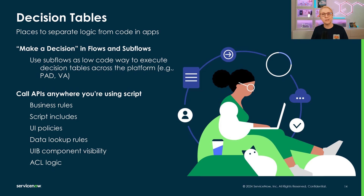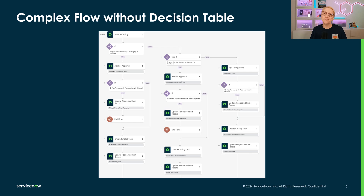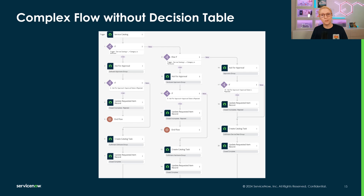Today we'll look at various examples in the context of Service Catalog fulfillment. Here's a first example to demonstrate the power of simplifying your flows and code with decision tables. We want to have different groups approve and fulfill a request based on the category of the catalog item. Without decision tables, we'll see if-then-else logic branching in the flow that can get unwieldy really fast, and it's hard to keep track of all the options once they exceed two or three paths.